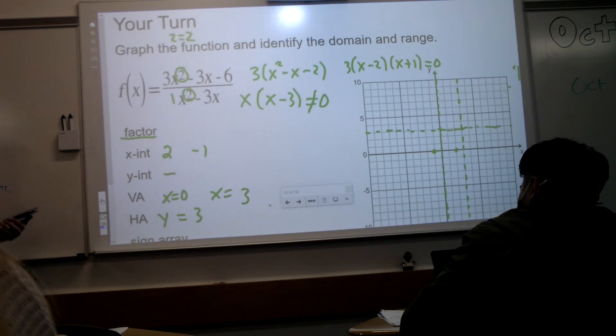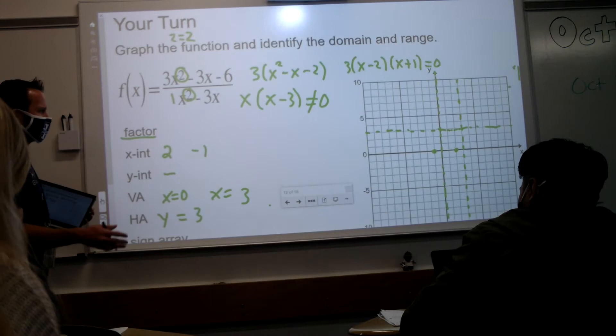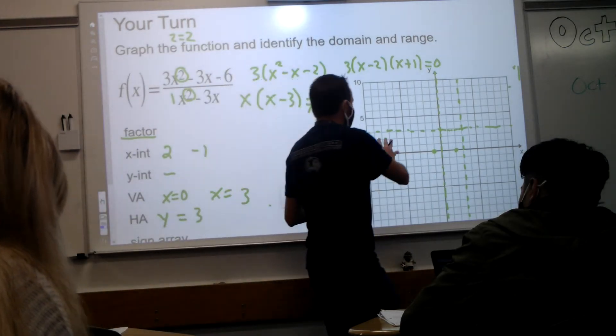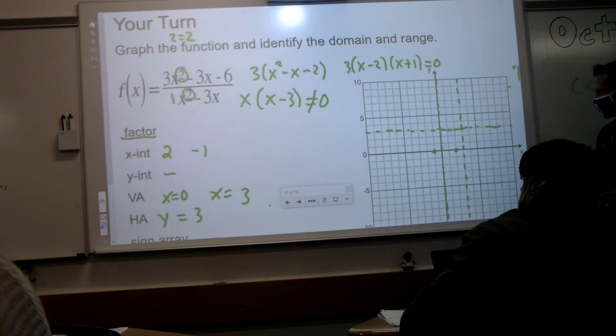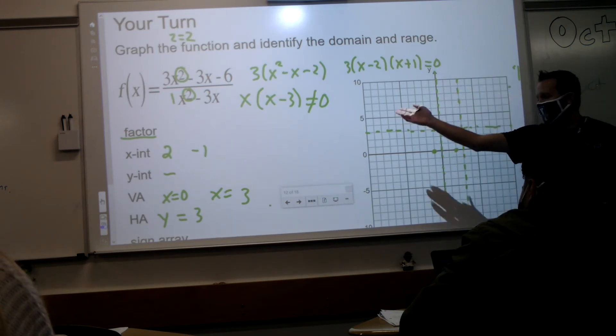I've got a vertical asymptote at zero, so nothing's going on. Okay, so now let's look at this. I've got basically, there's going to be three pieces here. There's the left, the middle, the right. On the left, is this going to be a down piece or an up piece?